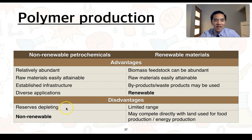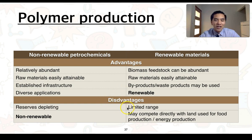The disadvantage of petrochemicals, however, is that being non-renewable resources means they will be depleted over time. For renewable materials, the advantages include the fact that biomass feedstock can be quite abundant, raw materials are also easily attainable, and byproducts and waste products may be used. The disadvantages of renewable materials, however, are that there is currently a limited range of these materials, and they may compete directly with land use for food production or energy production.